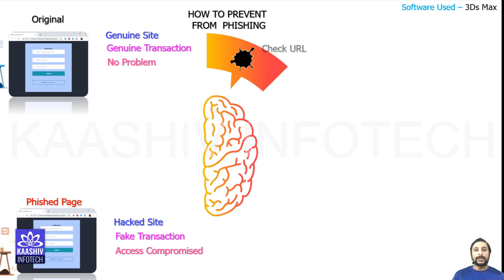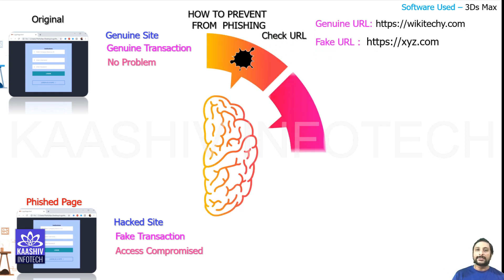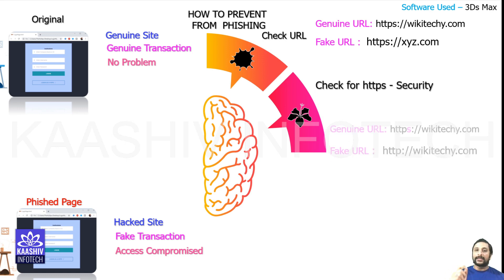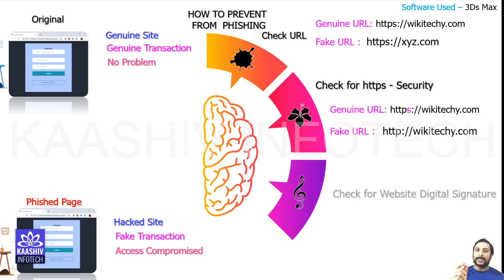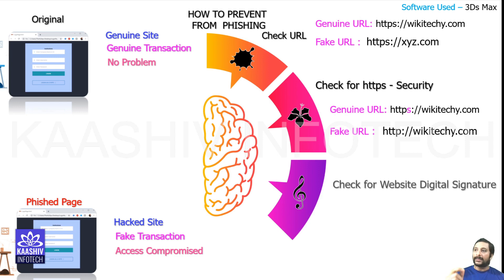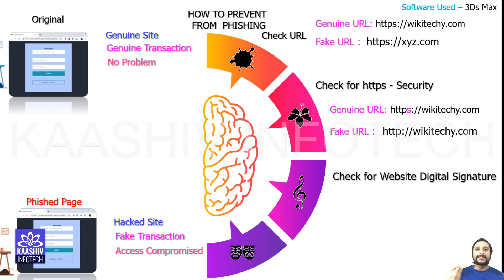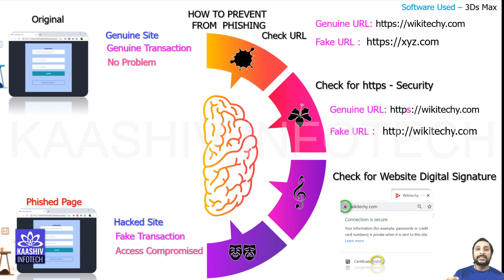To prevent this kind of transactions on phishing pages, the first thing is you have to check the URL before clicking it, whether it's genuine or not — for example, whether a banking website URL is correct. The second thing is check for security: whether it's an HTTPS secure site. If the link is HTTP, please be careful in handling it.